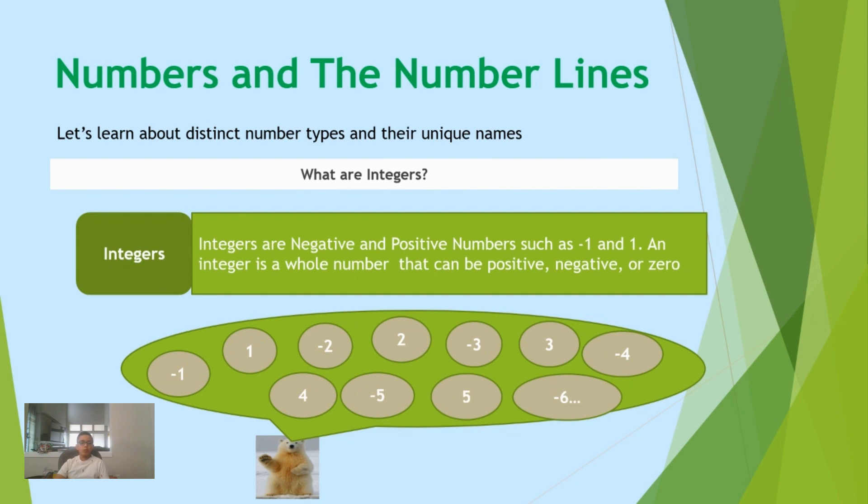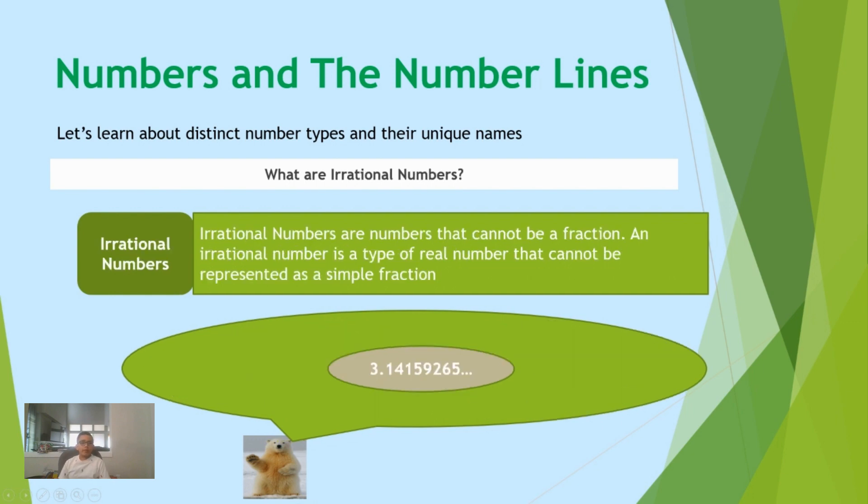Let's learn what irrational numbers are. Irrational numbers are numbers that cannot be written as a fraction, like 3.14159265.